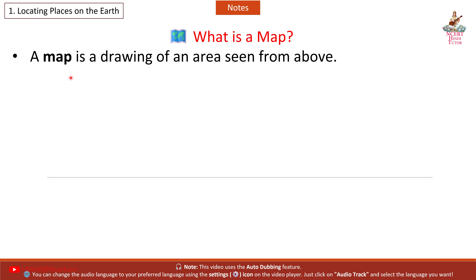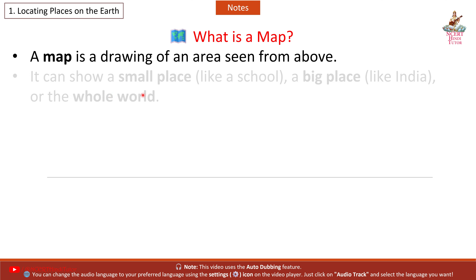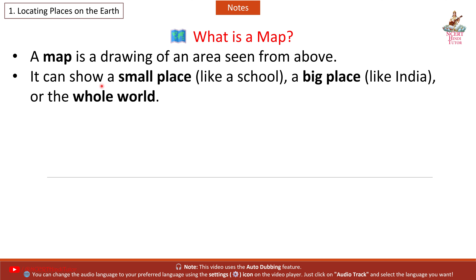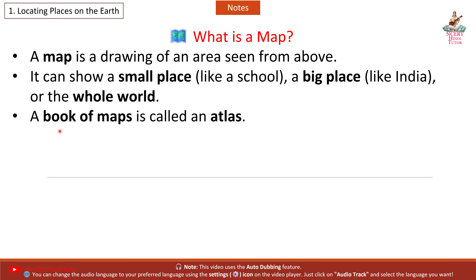What is a map? A map is a drawing of an area seen from above. It can show a small place like a school, a big place like India, or the whole world. A book of maps is called an atlas.